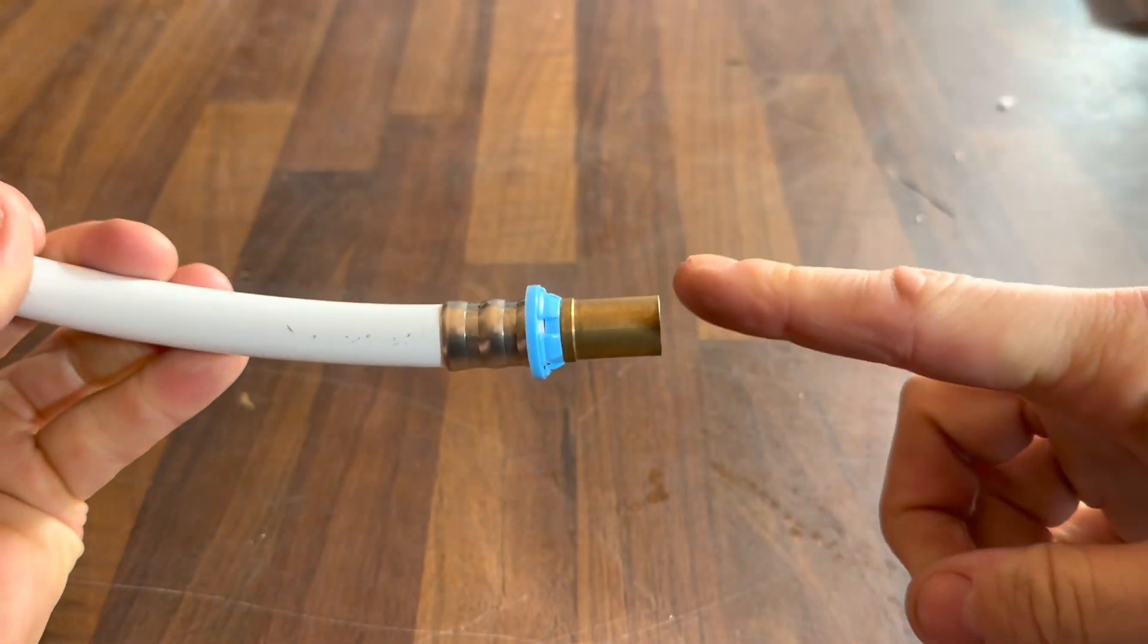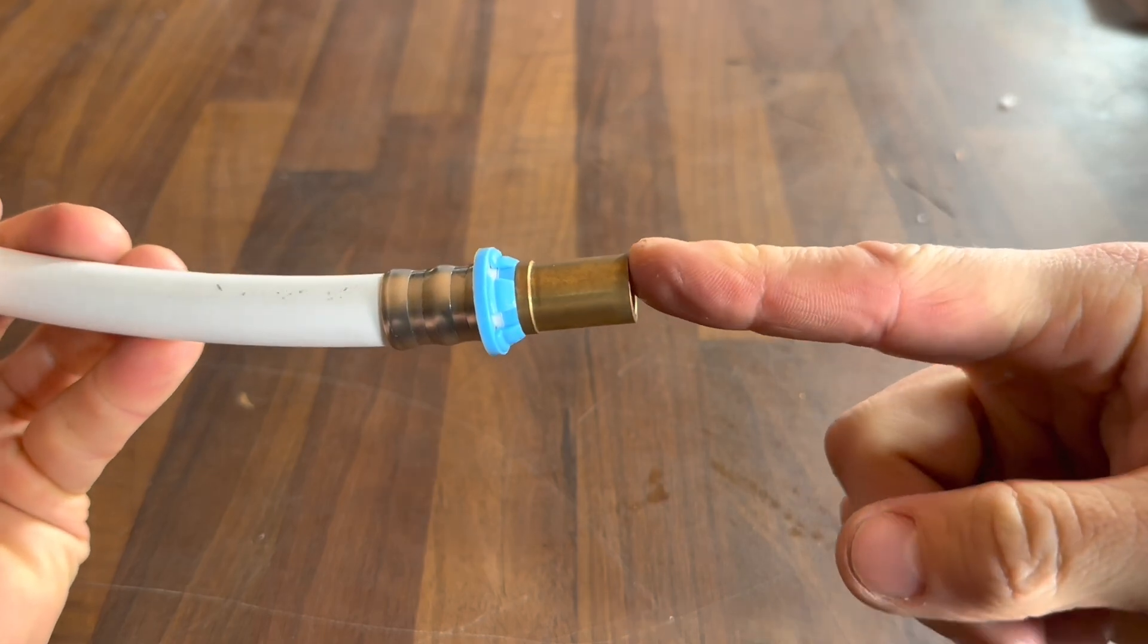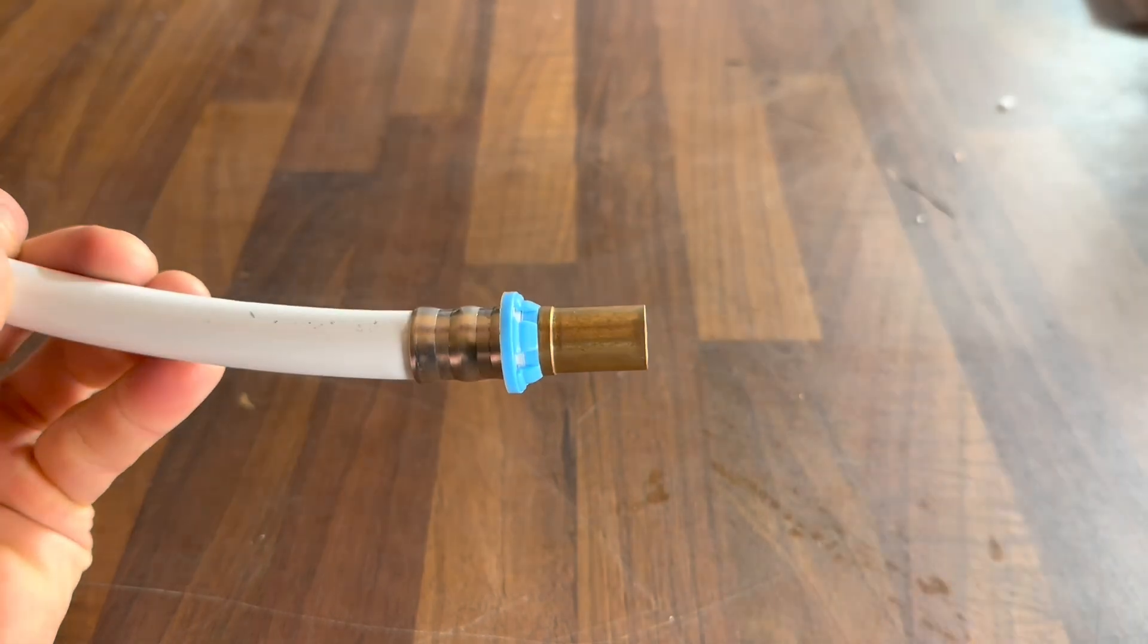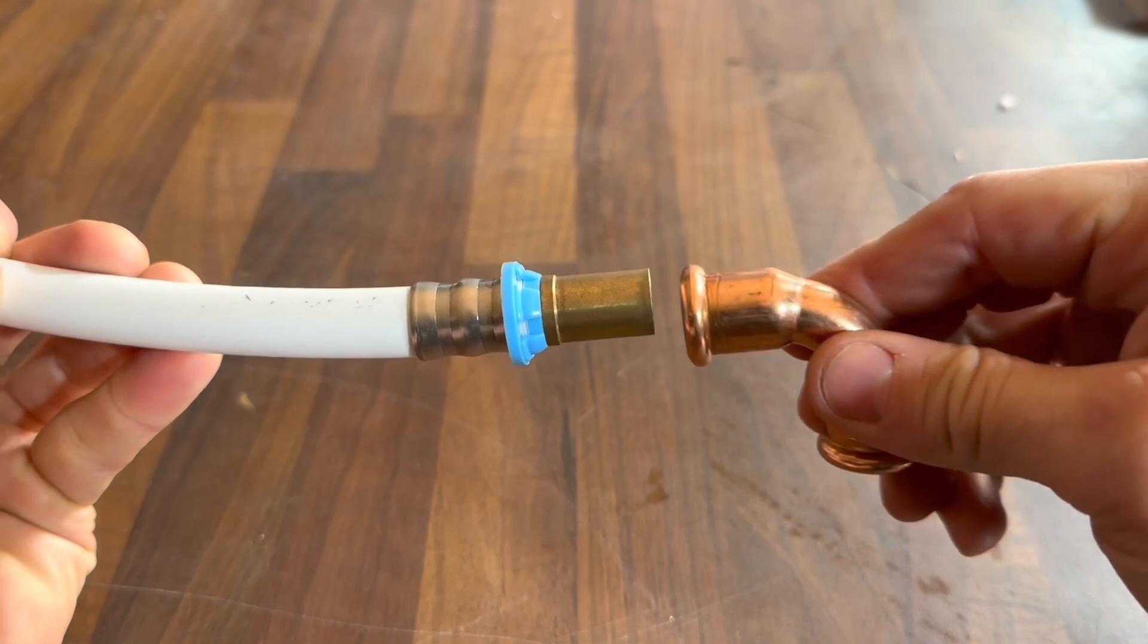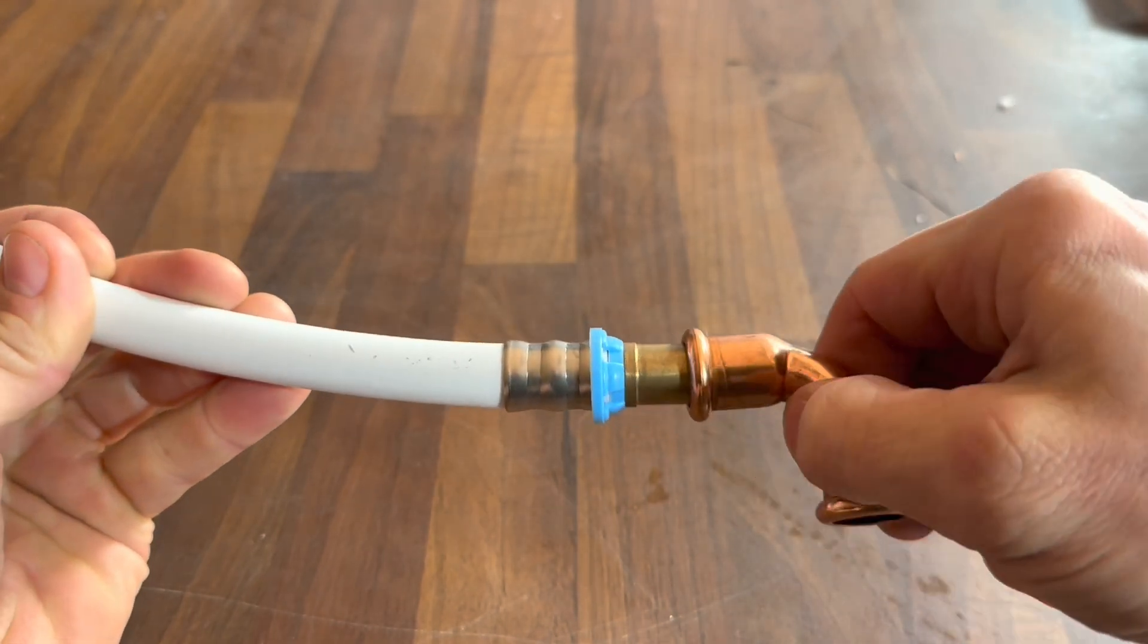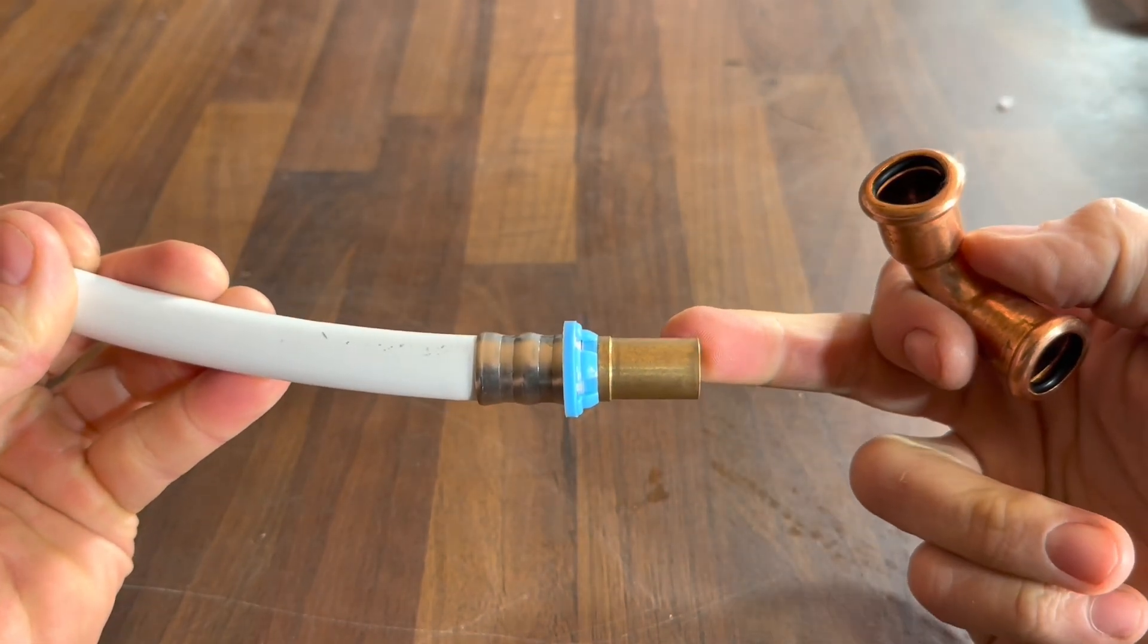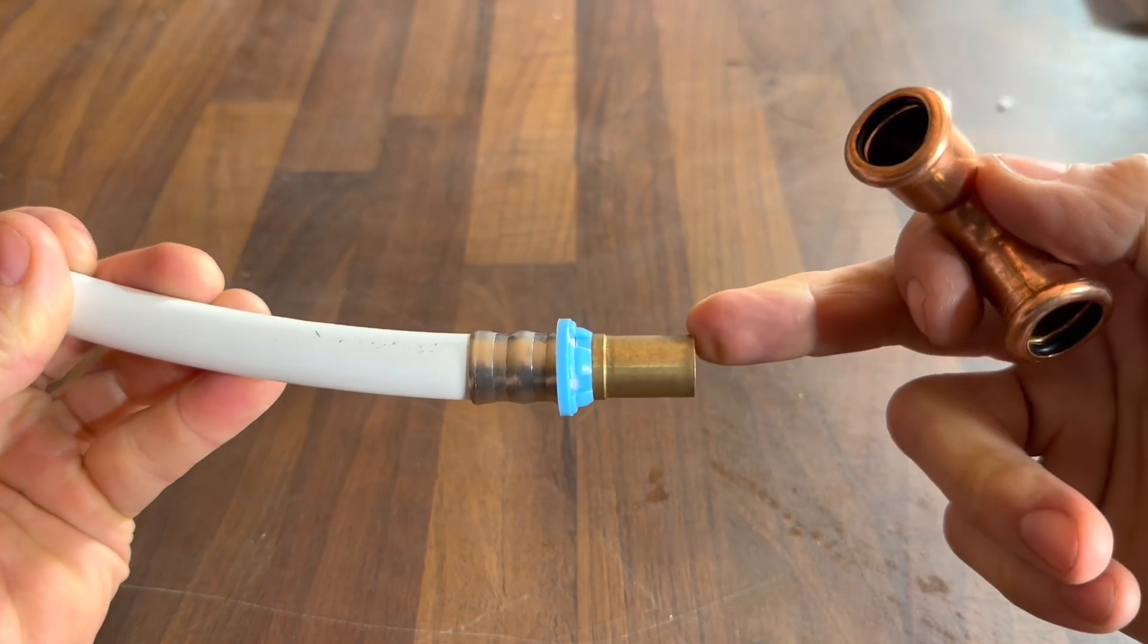Now this fitting like I said is a 15mm adapter, you can press straight onto this. So we've got a press fitting here to adapt this to copper. You could put a compression fitting onto that. You could solder it.